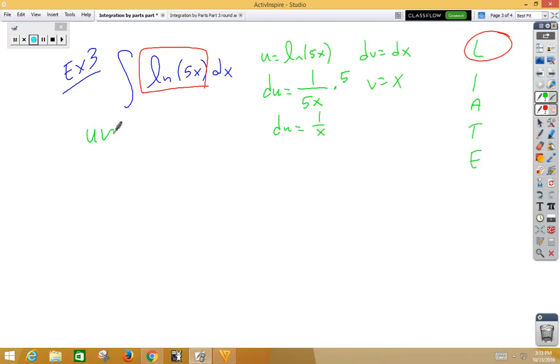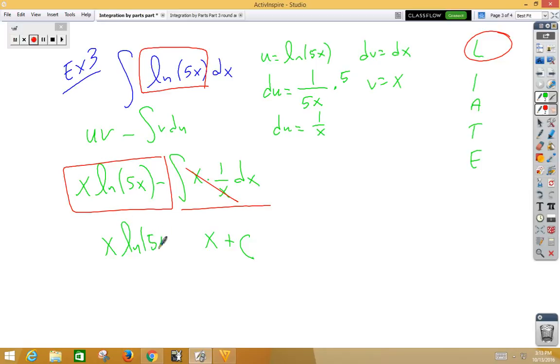u times v, so u times v would be x natural log 5x minus the integral of v du, so minus. Now we've got x times 1 over x dx. Notice, algebraically, those x's cross out, the front part is done, we are now integrating just 1 dx, which is x plus c. Bring everything else down, x natural log 5x minus x plus c.